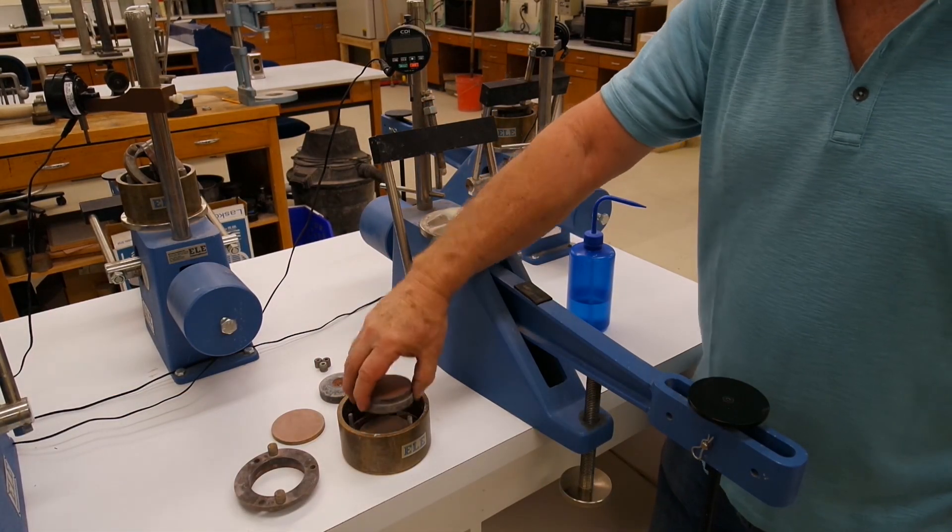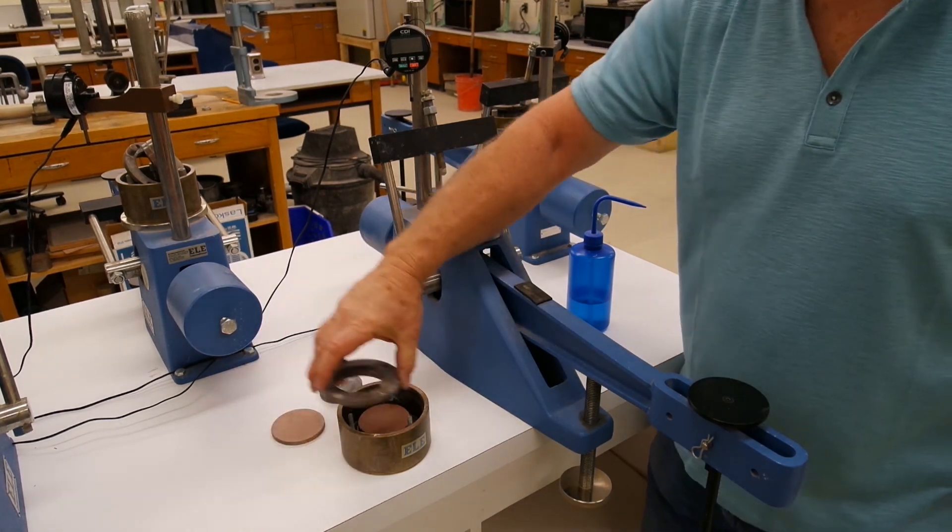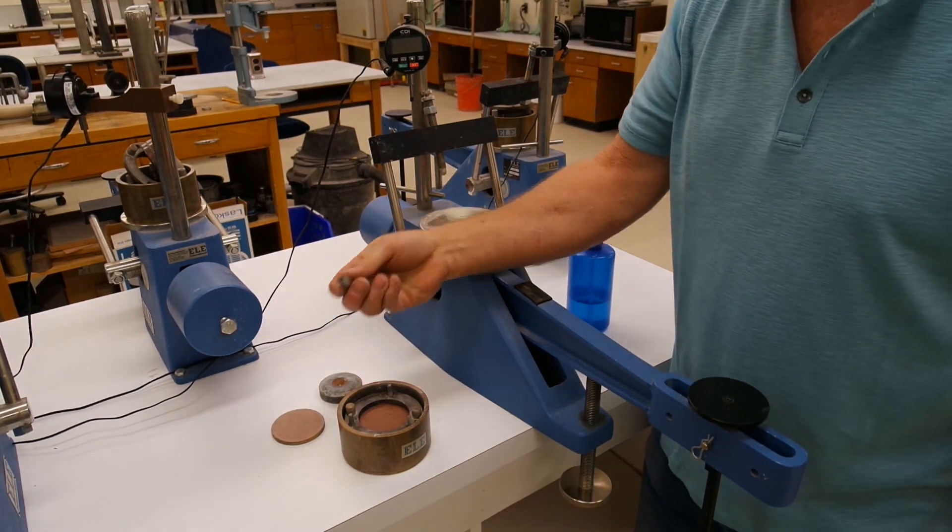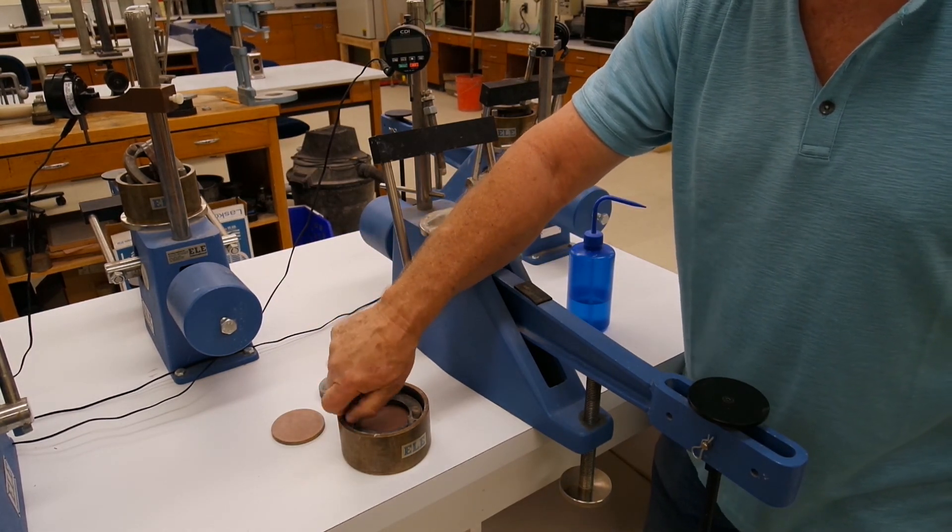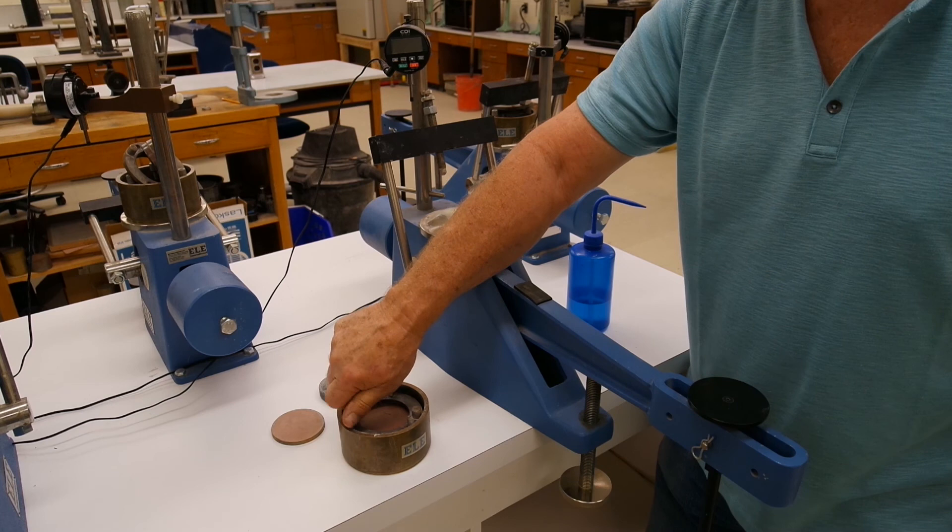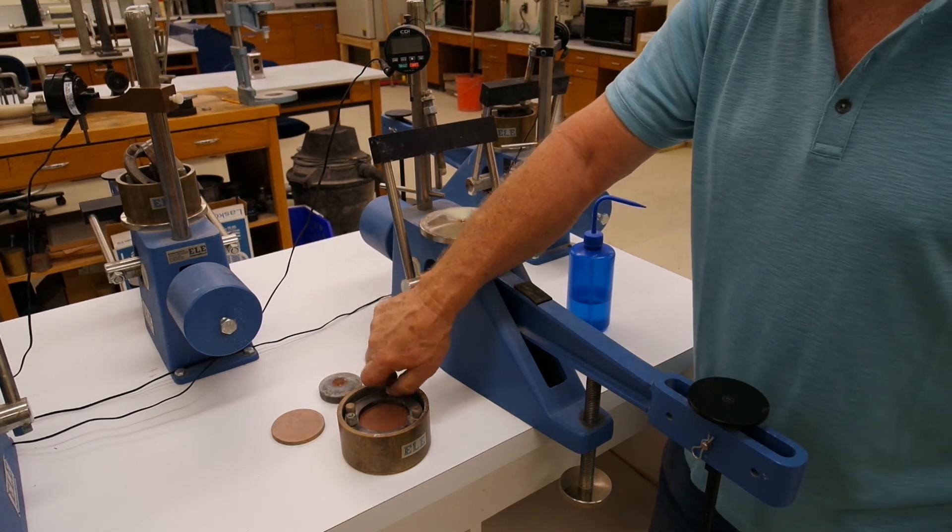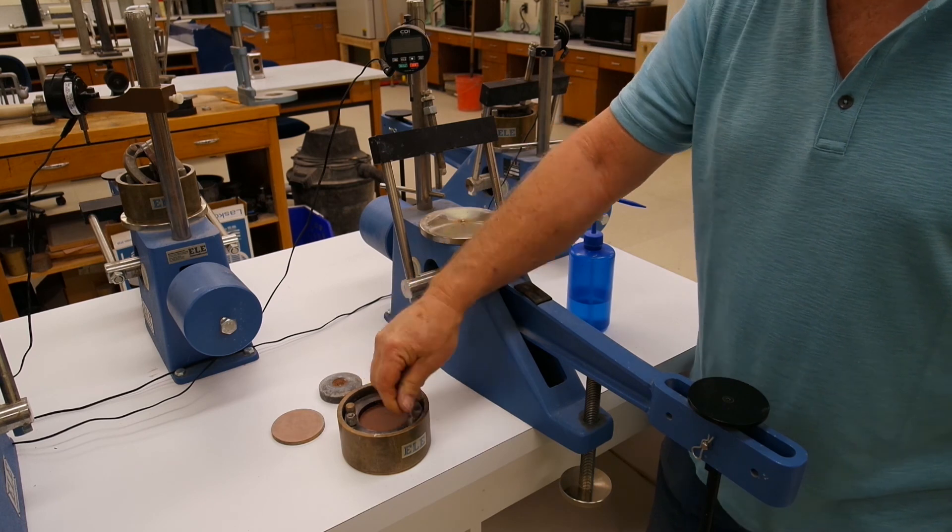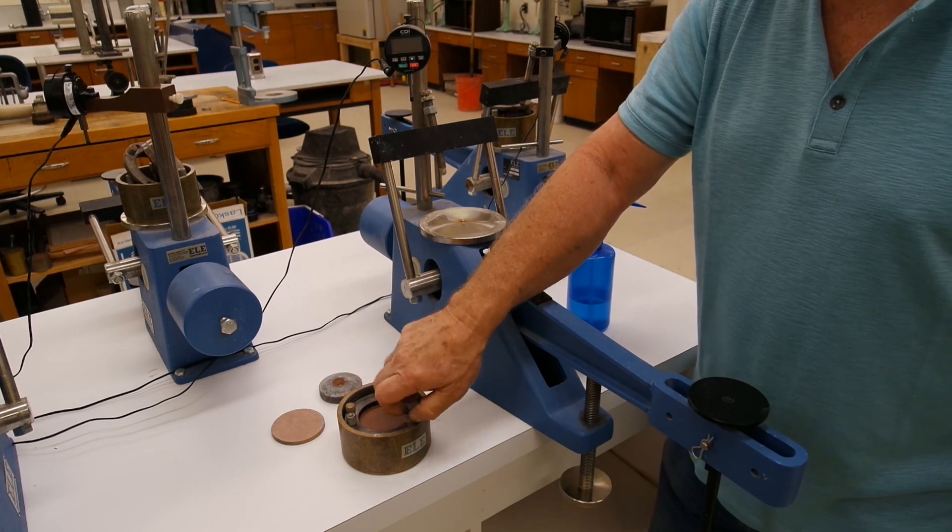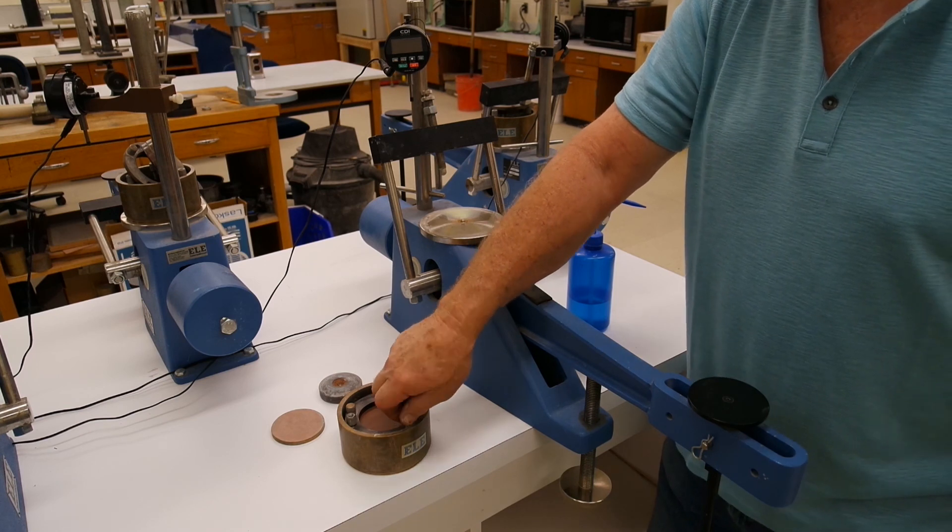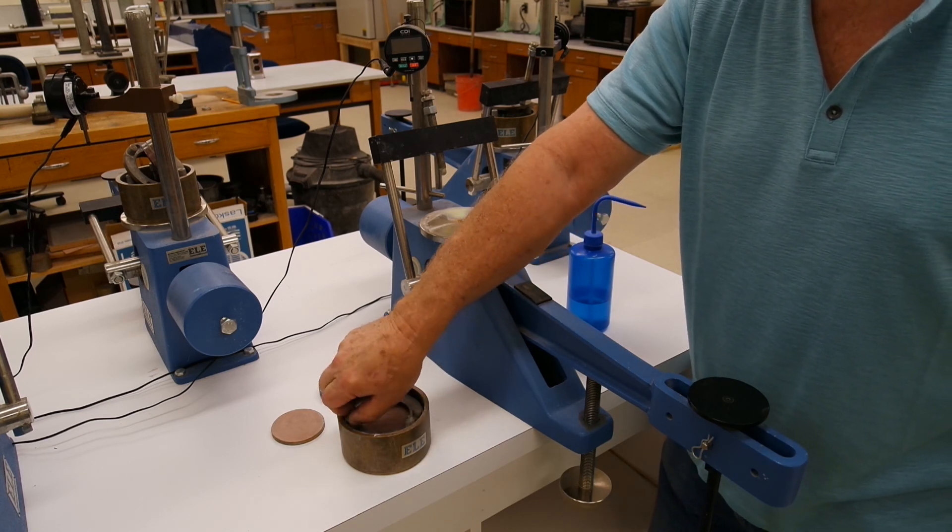We will place the ring into the consolidation machine on top of a porous stone. Place the hold-down ring on top and secure it with the three nuts on the threaded rod. Then we will place on top our porous stone, cap, and ball bearing, which will be our loading point.